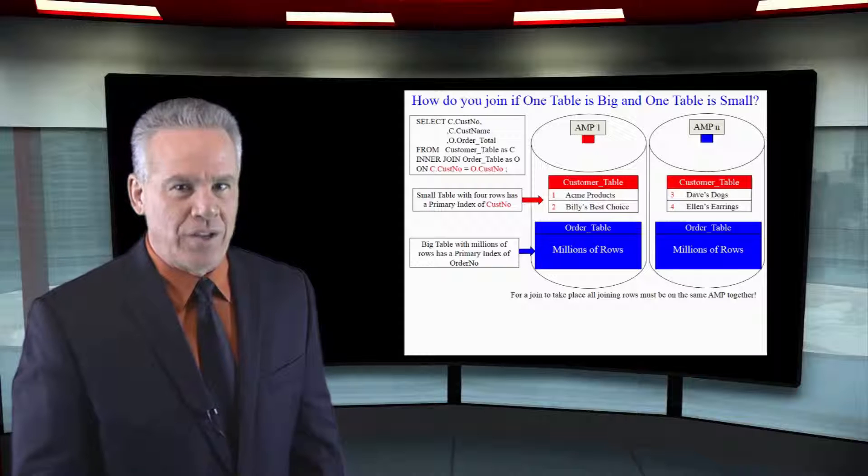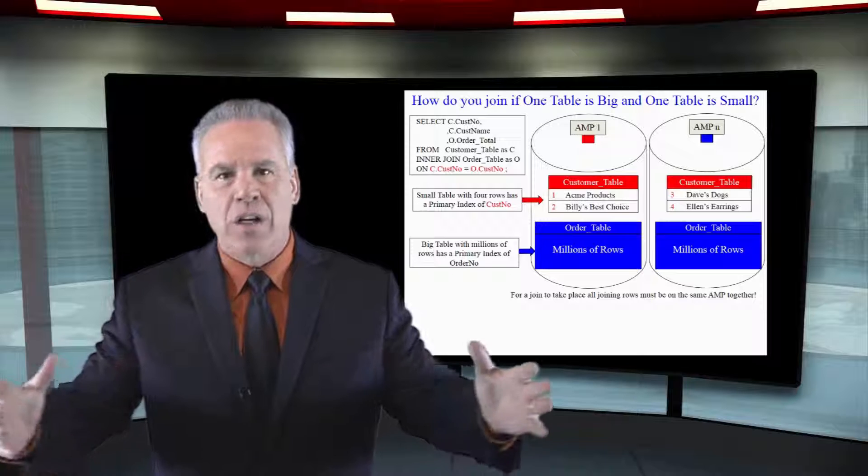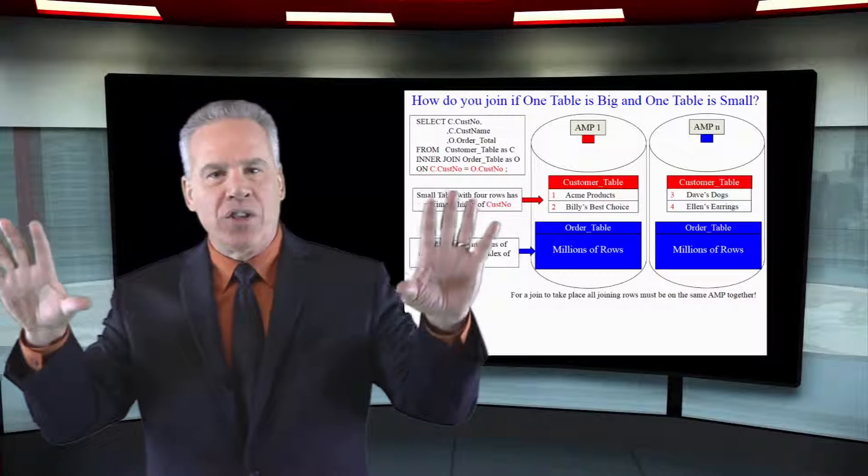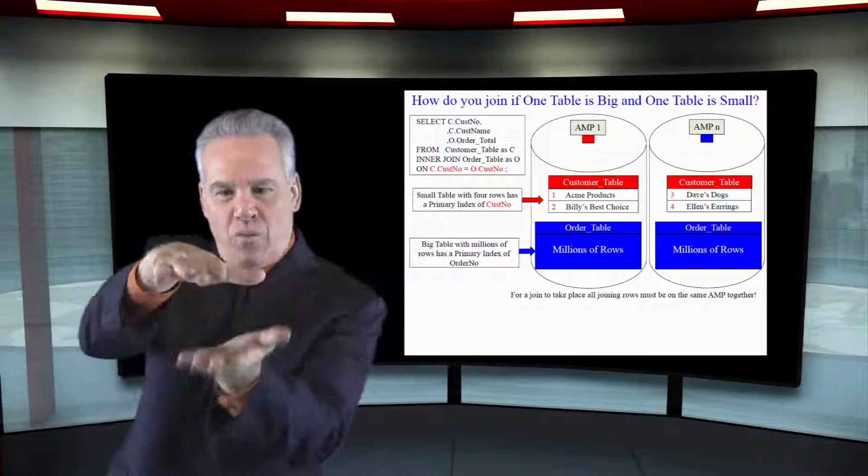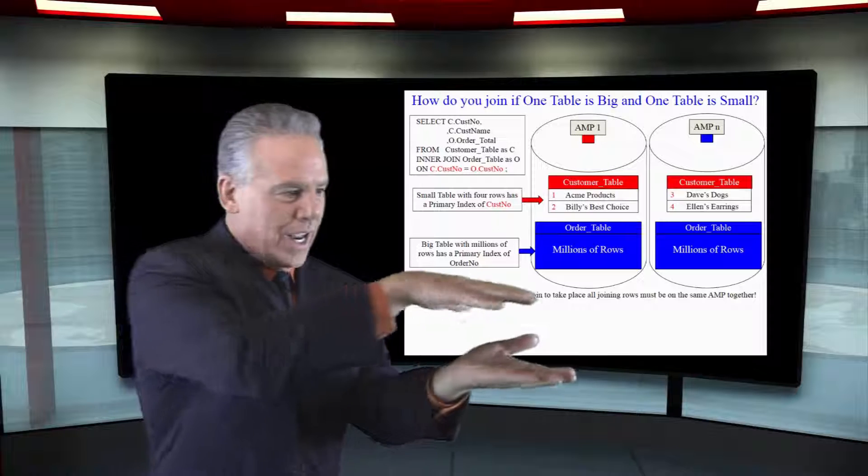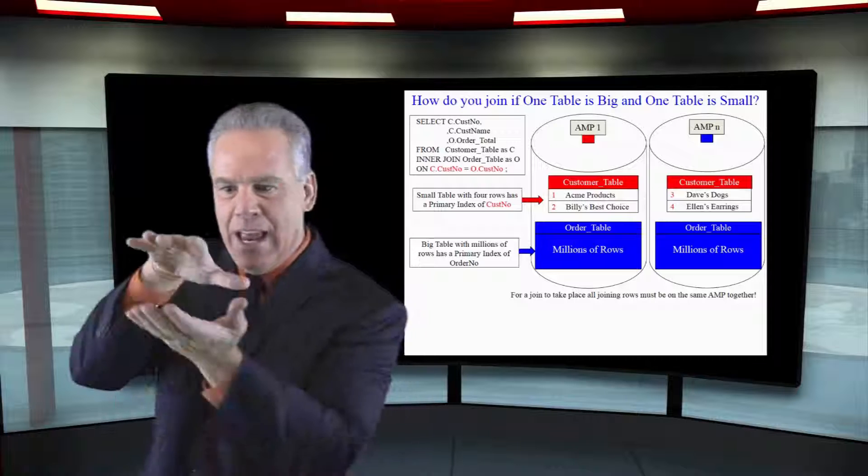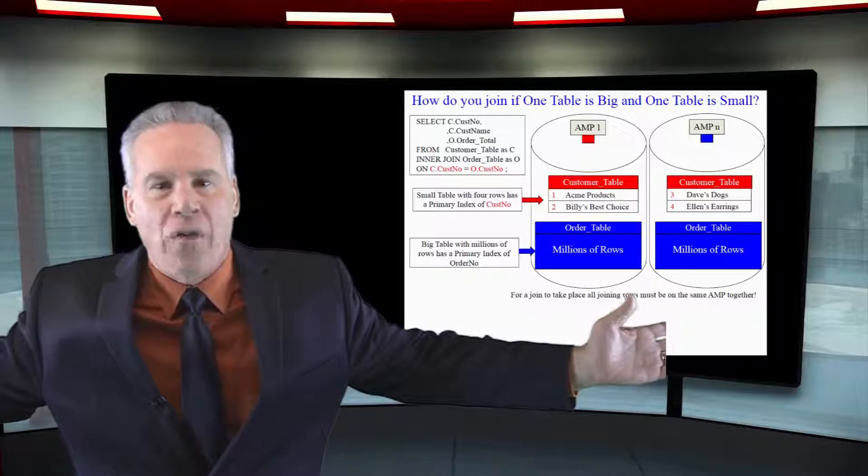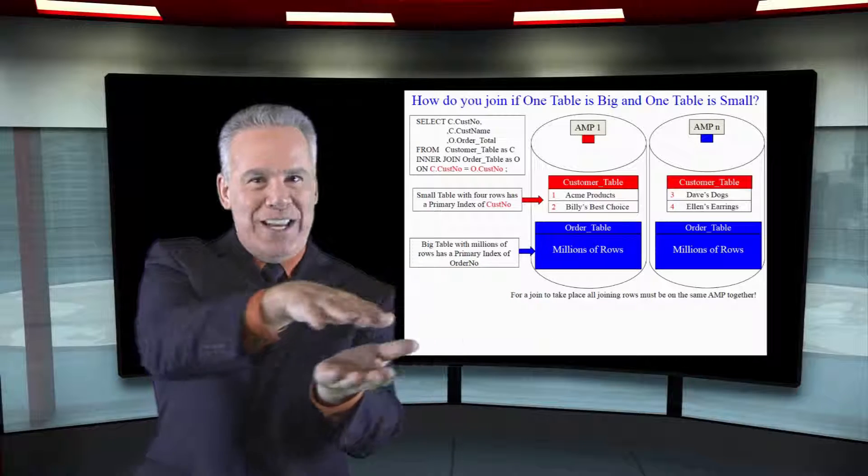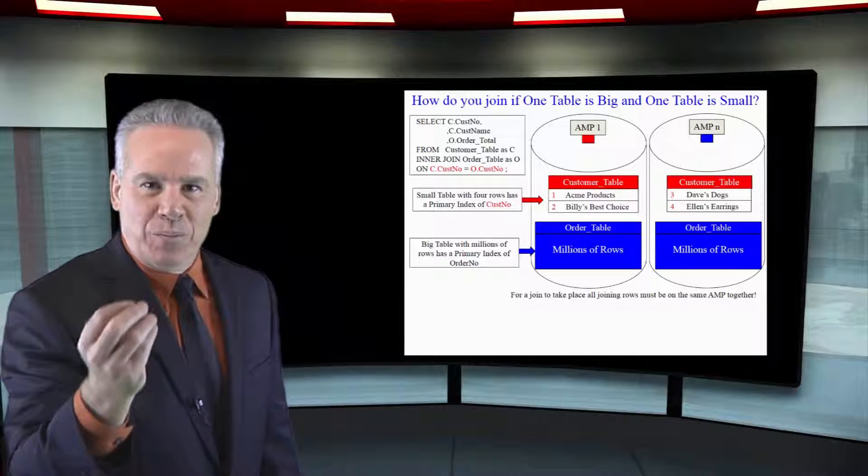So what I want you to do is, amps, first go out and give me all of the customers. And the amps return and say, there were four rows. And the parsing engine says, now take those four rows and I want you to duplicate those on amp one. Put all four of them on amp one. Amp two, amp three, amp four, all the way to all the amps. If there were a thousand amps, there'd be four thousand rows in spool for that table. And that's called a duplication.